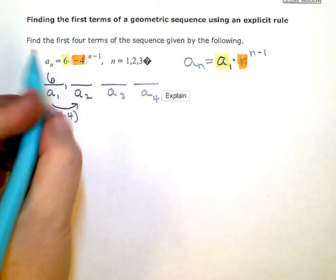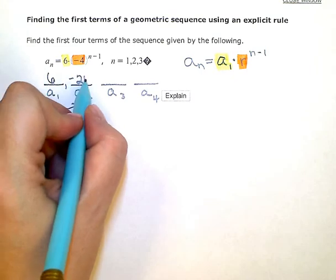6 times negative 4 would be negative 24 for my second term.